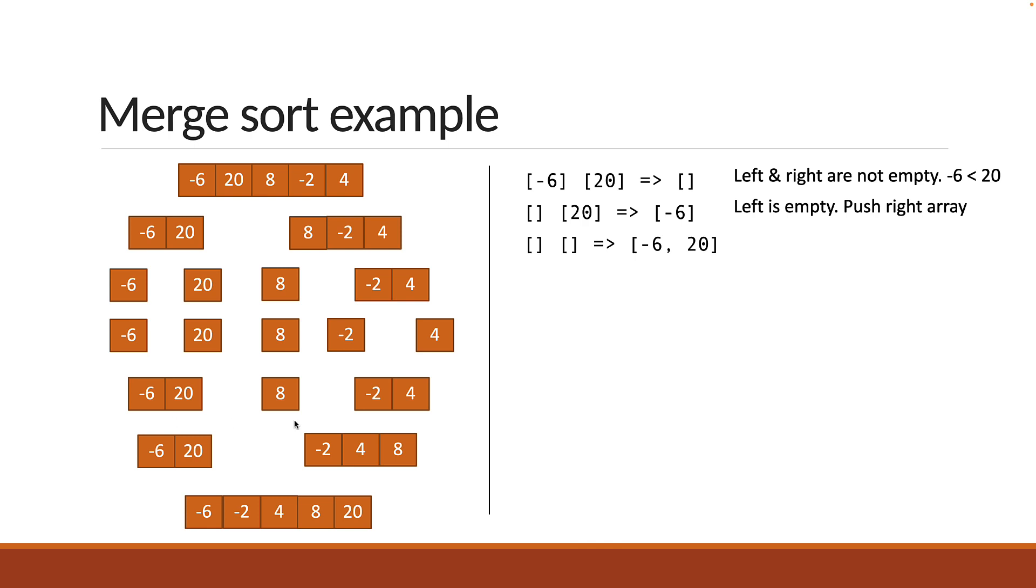Let's repeat this process for 8 and minus 2 comma 4 to make sure we get this right. We have the left and right arrays. They are not empty, so we compare the first element in each array. Minus 2 is less than 8. Push it onto the temp array.